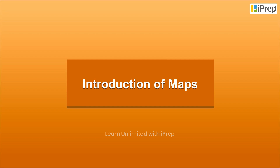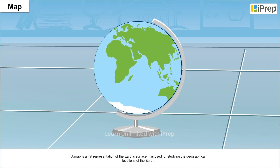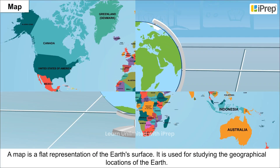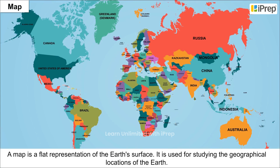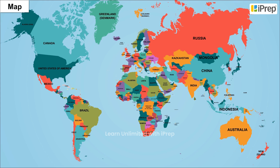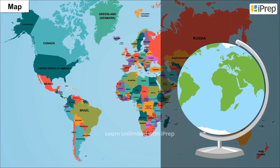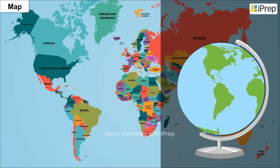A map is a flat representation of the Earth's surface. It is used for studying the geographical locations of the Earth. It provides more information than a globe and can be used as a powerful geographical tool. The compilation of many maps is known as Atlas. It has various sizes and measurements drawn on different scales. Maps provide extensive information and can be used for navigating from one place to another.